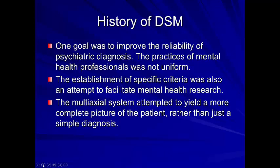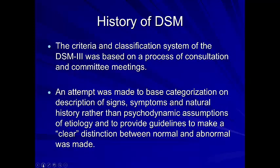It was very important to establish specific, objective, and measurable criteria to facilitate communication among mental health professionals and advance research. The multi-axial system — the five-axis system — was developed to get a more complete picture of the patient, in response to diagnoses being viewed as unidimensional. Axis 1 was major mental health disorders; Axis 2 was personality disorders and mental retardation; Axis 3 was other medical problems; Axis 4 was problems in the psychosocial environment; and Axis 5 was the Global Assessment of Functioning, scored from 1 to 100.